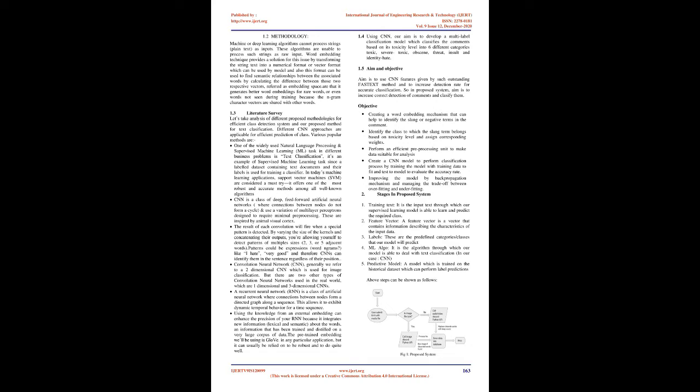Convolutional Neural Network (CNN). Generally we refer to a two-dimensional CNN which is used for image classification, but there are two other types of convolutional neural networks used in the real world, which are one-dimensional and three-dimensional CNNs. A Recurrent Neural Network (RNN) is a class of artificial neural network where connections between nodes form a directed graph along a sequence. This allows it to exhibit dynamic temporal behavior for a time sequence. Using the knowledge from an external embedding can enhance the precision of your RNN because it integrates new information — lexical and semantic — about the words, information that has been trained and distilled on a very large corpus of data. The pre-trained embedding used is GloVe, which can usually be relied on to be robust and do quite well.